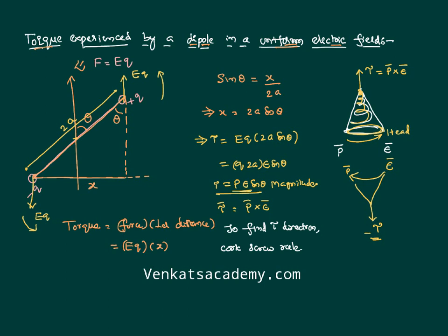We can further simplify using special cases. If theta is 0 — meaning the dipole is along the direction of the field — there is no torque at all, because sin 0 = 0. If theta is 90° — the dipole is perpendicular to the field — torque is maximum, equal to pE in magnitude, where p is the electric dipole moment and E is the electric field intensity. Thank you, we will continue this discussion further.